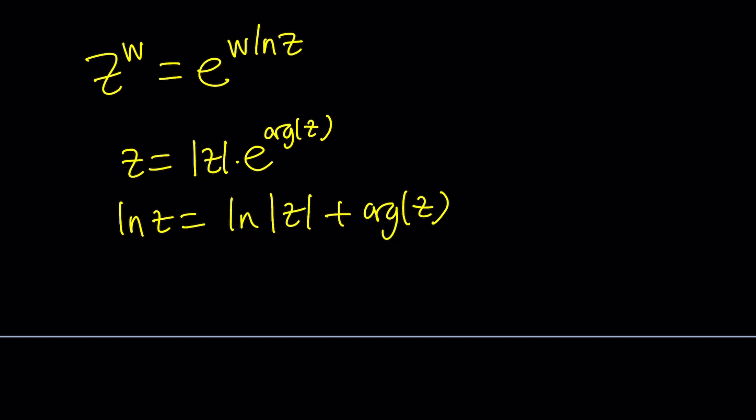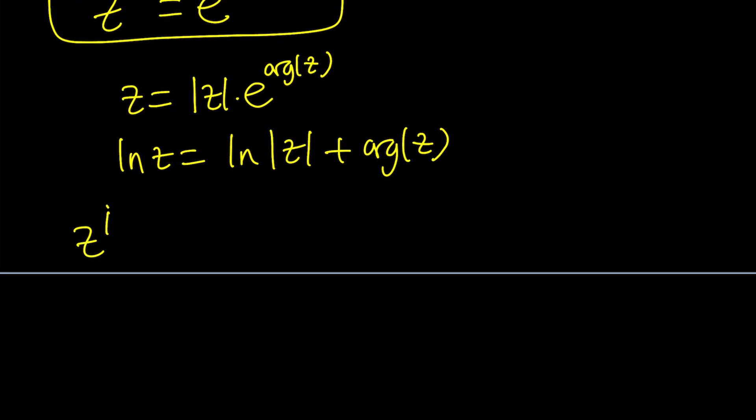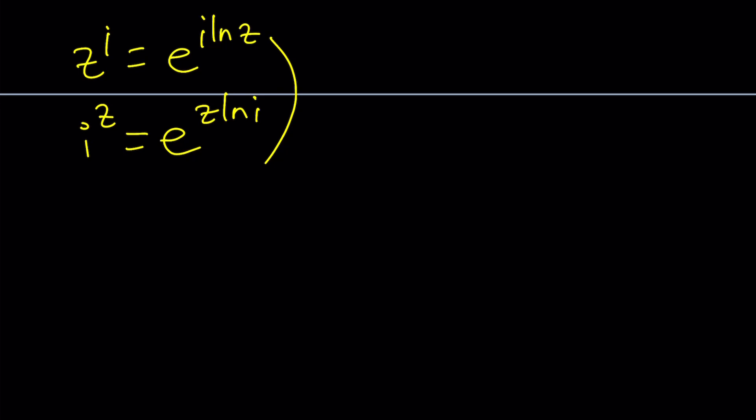So we have Z to the I. By using this, we can write it as E to the power I ln Z. And I to the Z can be written as E to the power Z ln I. And they're supposed to equal. So what happens if you set them equal to each other? E to the I ln Z equals E to the Z ln I. Awesome.